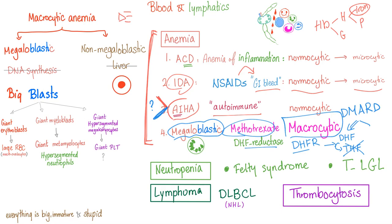There are two types of macrocytic anemia: megaloblastic and non-megaloblastic. Megaloblastic is called megaloblastic because it has blasts, and blasts are big. Non-megaloblastic anemia has small cells called cytes. How to differentiate between megaloblastic and non-megaloblastic anemia? The answer is hypersegmented neutrophils.